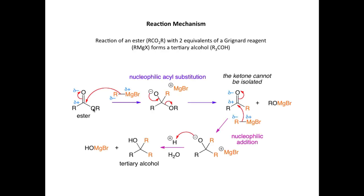In the first step, we react one equivalent of our Grignard reagent with the ester. The Grignard is the nucleophile. The nucleophilic site is the carbon-magnesium bond, so we take the electrons from the centre of this bond and donate them towards the electropositive carbon in the carbonyl, pushing them onto the electronegative oxygen atom, forming this unstable alkoxide ion intermediate. This alkoxide ion intermediate then breaks down with expulsion of RO⁻ as a leaving group, and we form a ketone. Overall, we've converted the ester into a ketone in a nucleophilic acyl substitution reaction. The OR group in the ester is replaced by the R group in the ketone.